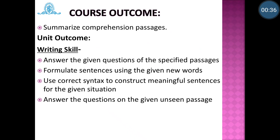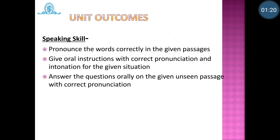The course outcome is to summarize comprehension passages. You have to summarize and make short notes as per the understanding of given passages. Also you have to develop your writing skill. After learning this comprehension and different articles, you will be able to answer the given questions of specified passages. The student will also be able to formulate grammatically correct sentences using different vocabulary, practice making meaningful sentences, and answer questions on any unseen passages. In speaking skill, the student will be able to pronounce words correctly, give oral instructions with correct pronunciations, and answer questions orally on unseen passages.